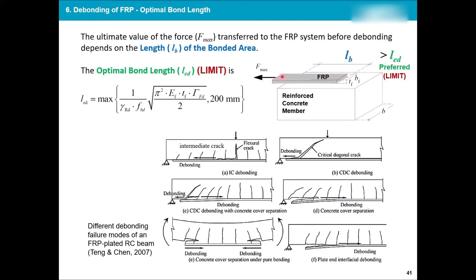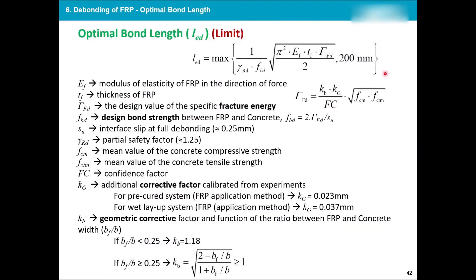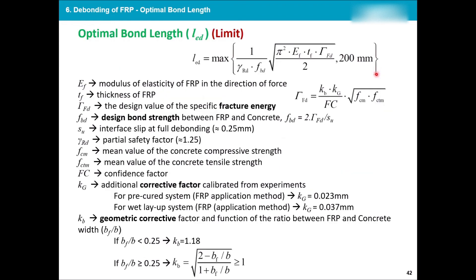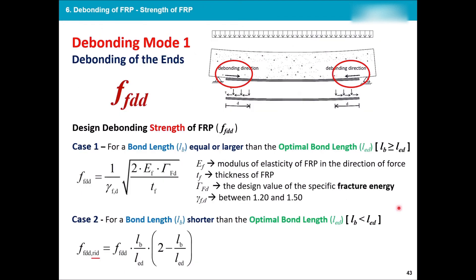Using those, you can calculate the l_ed, which is the limit, the optimal bond length. And if your connection is bigger than optimum bond length, you are free. Then whatever force you apply, the bonding will not be the reason of the failure. The failure can be like the FRP to give up and it reaches to the strength, or the concrete gives up and the whole system fails. So this is the limit that you have to calculate its maximum. You calculate this value, you calculate this value. If this comes up 400 and this is 200, the 400 will be the right answer. And it clearly mentions that the maximum is the bigger, the better. So the more limit you have means that you will prevent the bonding better. Remember the formula depends on some properties of FRP and some properties of the concrete itself. So this optimum length brings these two units together.